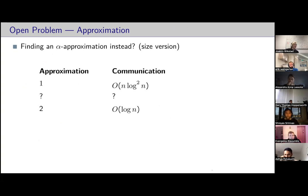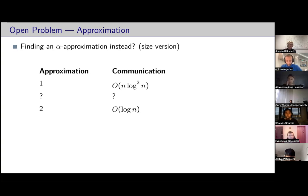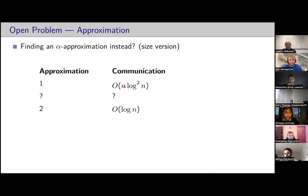Another open problem is approximation. We've discussed exact algorithms needing n log² n bits. For a two-approximation of the size, it's sufficient for just Alice or Bob to find the maximum matching in their own graph and send the size — this takes only log n bits. But if they need to output even a constant approximation of the matching itself, that already requires a linear number of edges. What lies in between for the size version? How good an approximation can you get with, say, polylog communication?